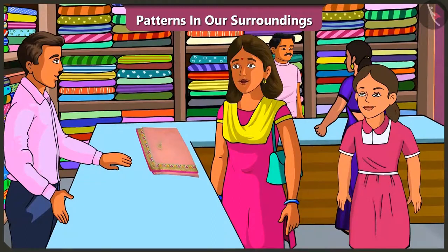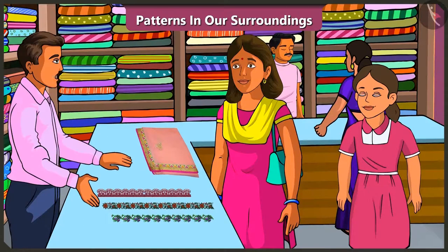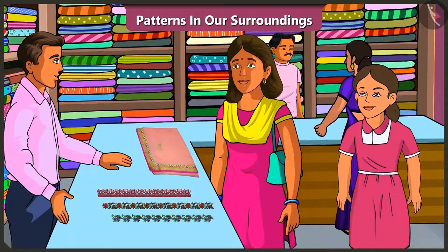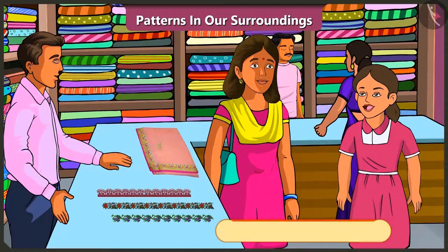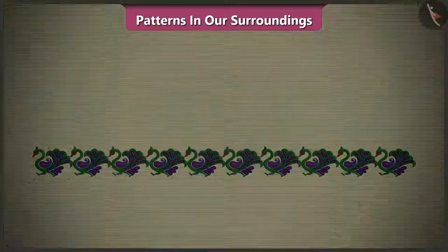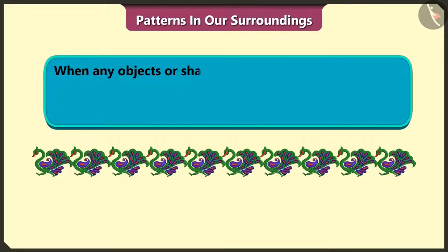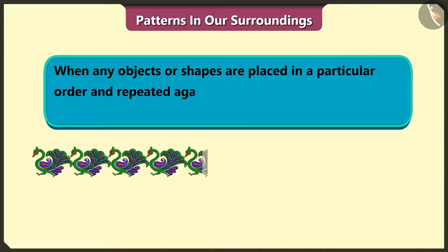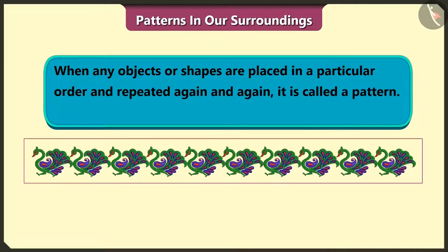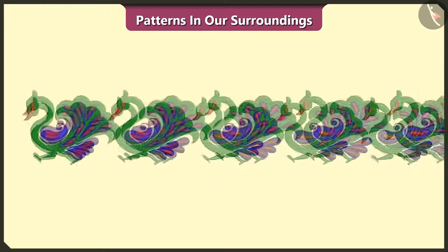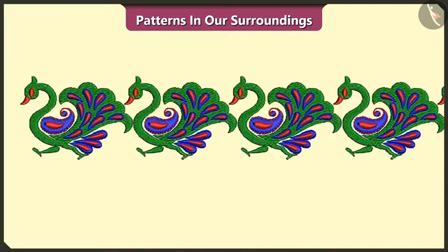Brother, show me a good border or lace which can be stitched to the saree. These are the options available. You can pick any pattern that you like from these options. Mammy, what is a pattern? When any object or shapes are placed in a particular order and repeated again and again, it is called a pattern. Look, this lace has a pattern made of peacocks.